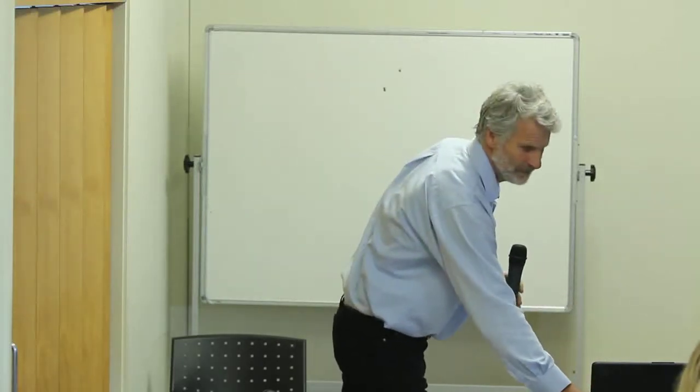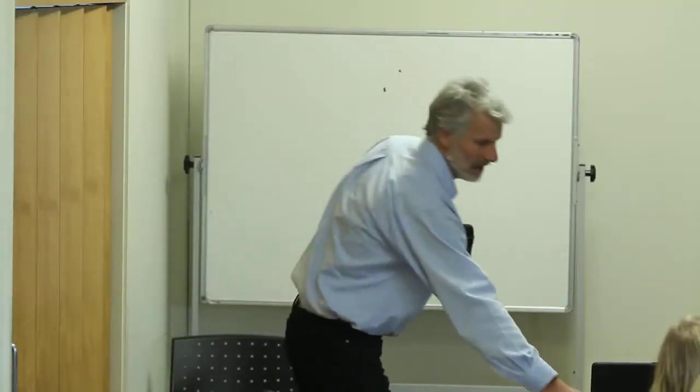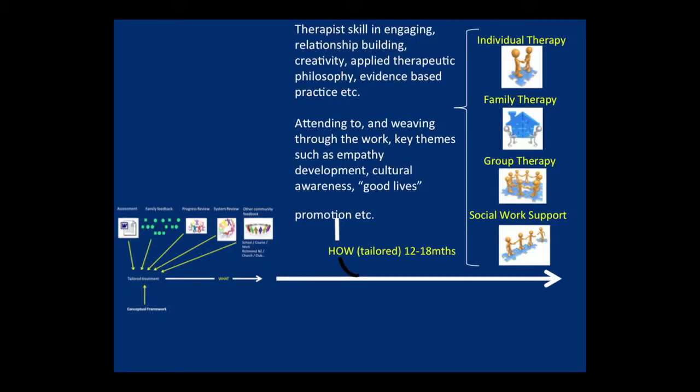In terms of the adolescent programme, the interventions over 12 to 18 month period, assessment, family involvement, system reviews, community, hooking into the community supports for the young person. You can see how all of those different aspects - individual, family, group therapy and social support - all blend together for the treatment work.